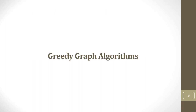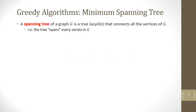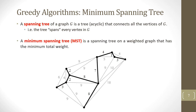In today's lecture, we will look at some greedy graph algorithms. A spanning tree of a graph is a tree that connects all the vertices of the graph — that is, the tree spans every vertex. A minimum spanning tree is a spanning tree on a weighted graph that has the minimum total weight. For a given graph there can be many spanning trees, but generally there is only one minimum spanning tree, unless there are many edges of equal smaller weights.